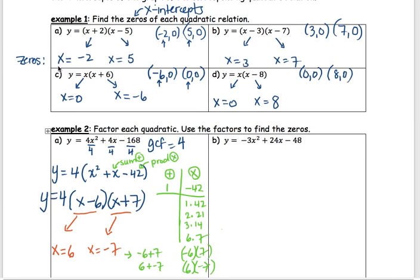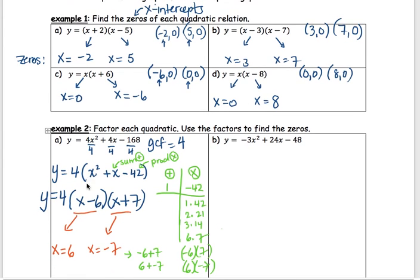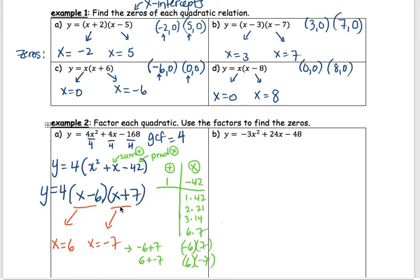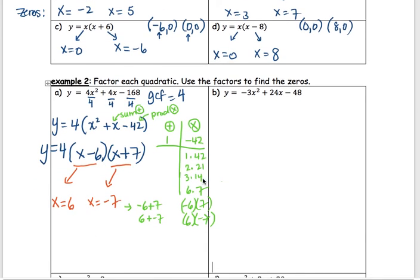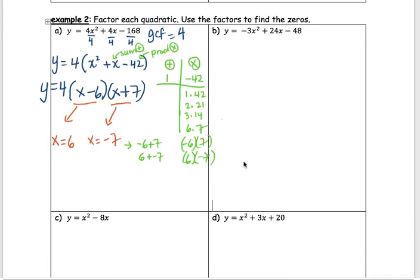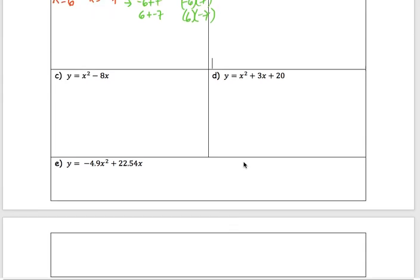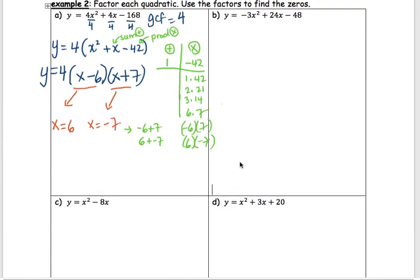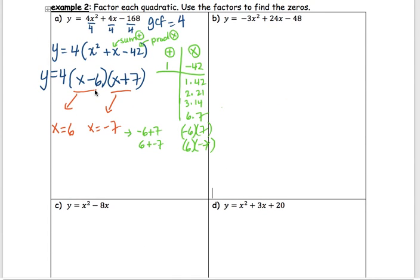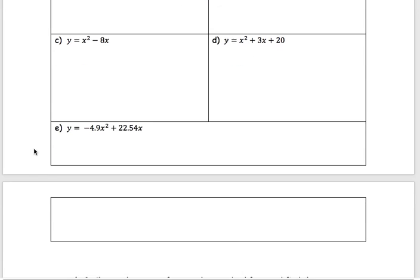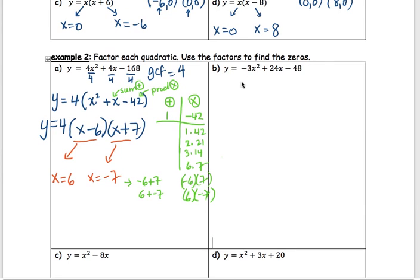That's a quick way of finding the zeros, the x-intercepts — but we have to get it to factored form first. If it's already factored, pop it out. If it's not, factor it out first using the adding and multiplying table, and then we get there.